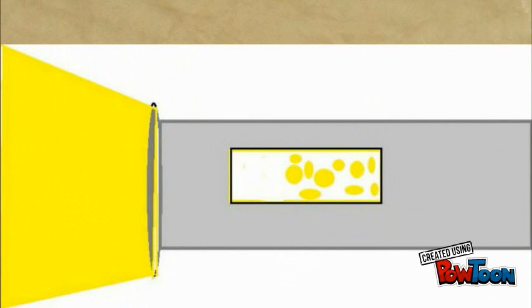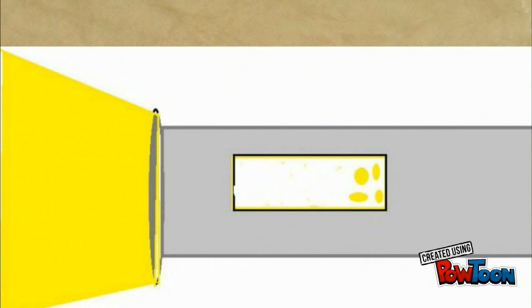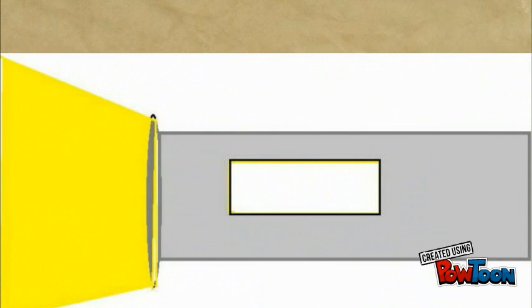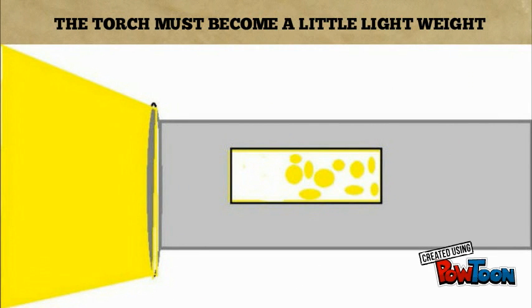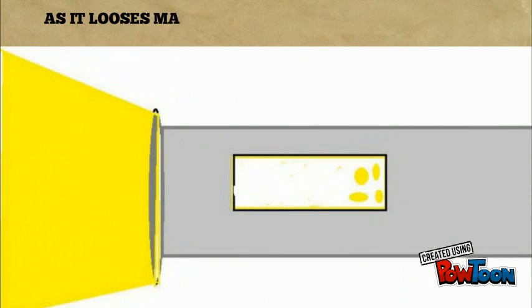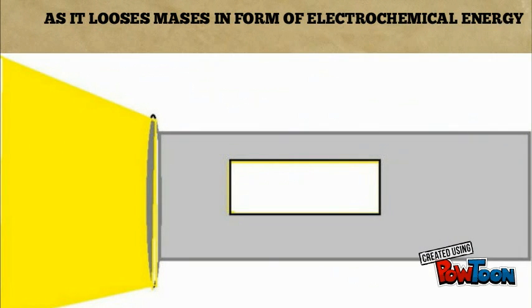As the torch glows, the battery starts decaying and the electrochemical energy starts depleting and changing into light energy. The torch must become a little lightweight as it loses mass in form of electrochemical energy.